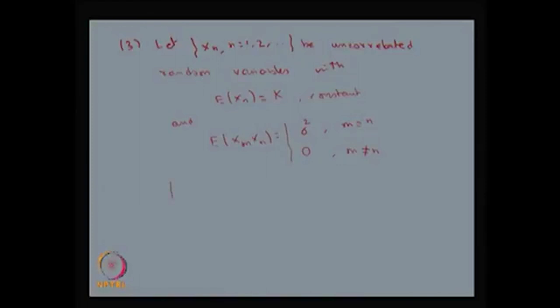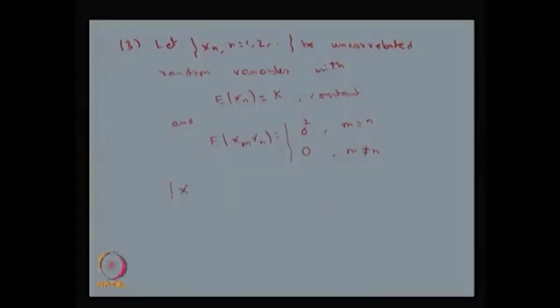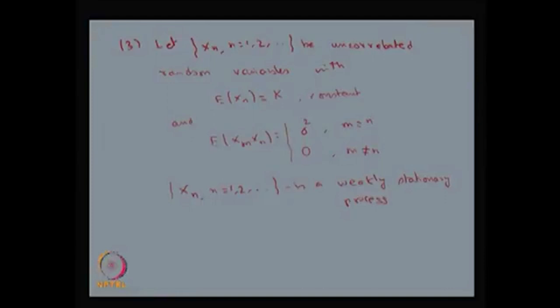Not only this — each random variable is uncorrelated, meaning the correlation coefficient is 0, the mean is constant, and the expectation of the product of any two different random variables is 0, while for the same random variable it equals the variance σ². If you cross-check all three conditions of wide sense stationarity — the mean function, existence of finite second order moment, and covariance being a function of only the difference — all three conditions are satisfied. Therefore, this is a weakly stationary process, or wide sense stationary process, also called a covariance stationary process.